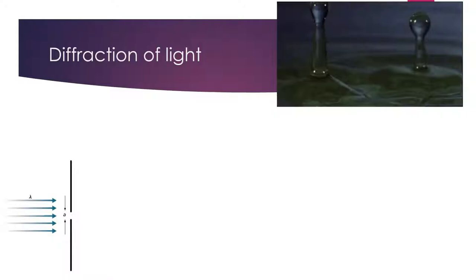Before we get to quantum mechanical diffraction, we can think about plain old regular diffraction of waves by thinking about light. In 1801, Thomas Young showed that light diffracted, which ended the debate that had raged for a couple of centuries since Newton on whether light was a particle or a wave. If light diffracts — which Young showed it did — that means light has to be a wave and not a particle. Of course, this clashes with Einstein's finding that light does in fact act as a particle, which is why it's so weird.